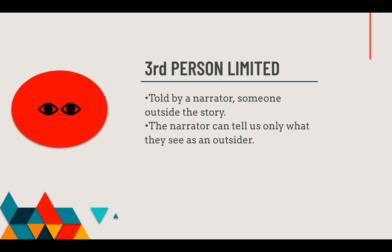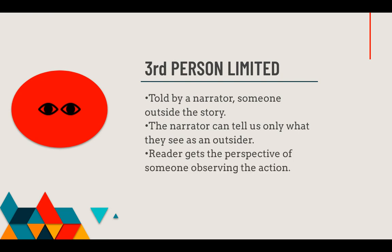Picture a cameraman — somebody standing off to the side recording everything that's happening. That's all you can see, just what they see through the lens. The reader gets the perspective of just that person observing the action. We're not going to know what each character thinks or feels, because you can't see that from the outside. Because it's somebody on the outside, they use the words he, she, they, and them, since they're talking about others, not themselves. This is very different from first person, because we don't get the perspective, opinions, or thoughts of a character experiencing the action — we just see it from the outside.